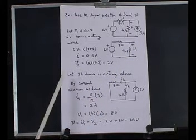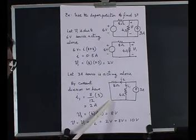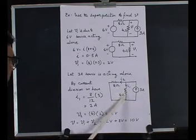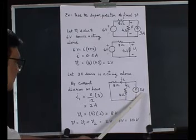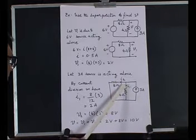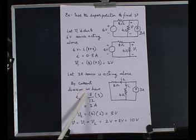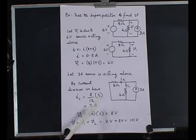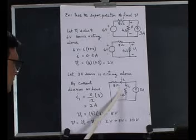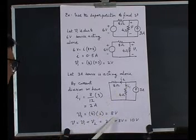As a second step, we replace the 6 volts source with a short circuit and then see the response at 4 ohms only because of the 3 amperes current source. We apply the current division formula to find out the current flowing in 4 ohms. The current division formula gives us: (8 ohms / 12) × 3 amperes = 2 amperes. So 2 amperes is the current flowing in the 4 ohms resistance.